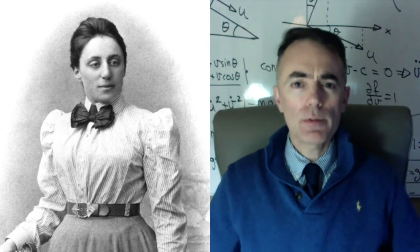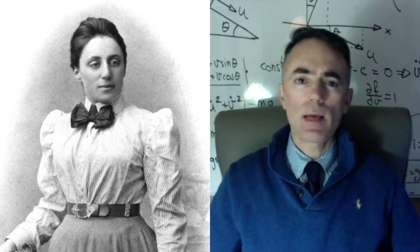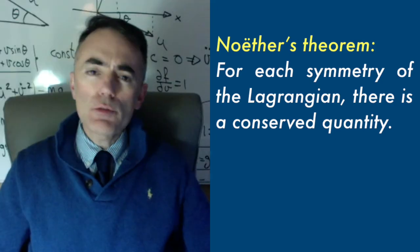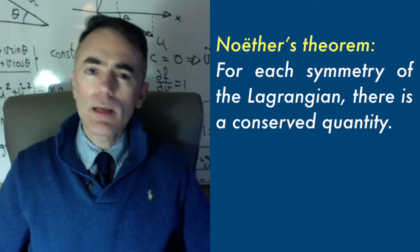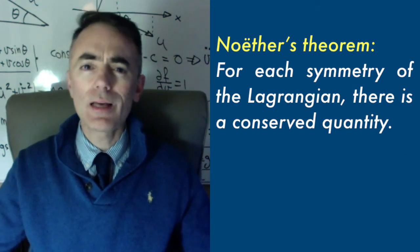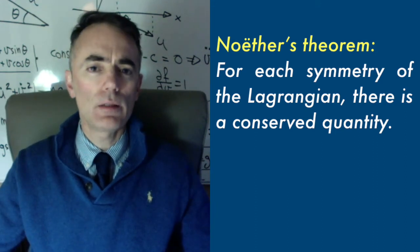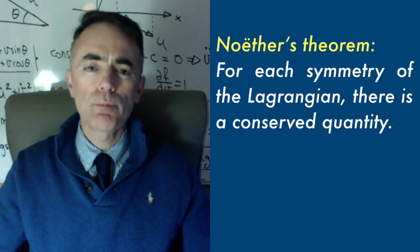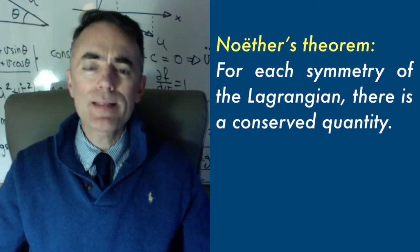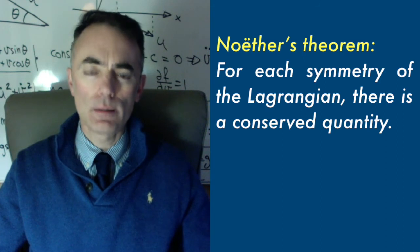Noether's theorem says that for each symmetry of the Lagrangian, there is a conserved quantity. Symmetry here means that if you change the variable by a small amount, it does not affect the Lagrangian to first order. And conserved quantity means that it is constant in time.